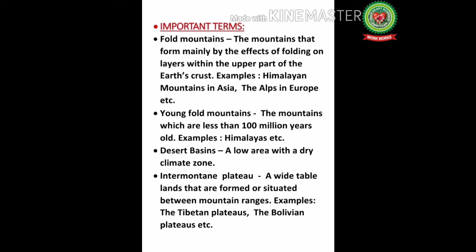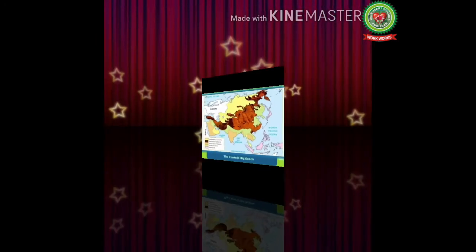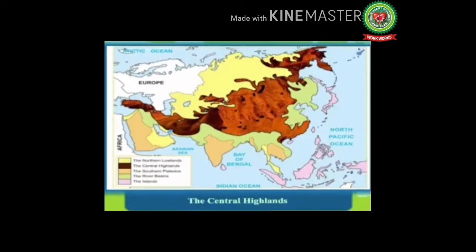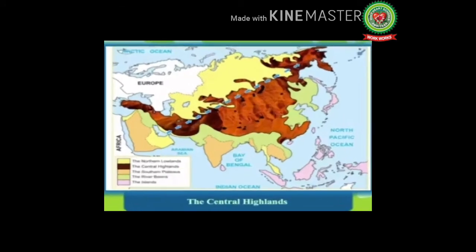Today's topic is the central highlands. The central highlands comprise a complex system of fold mountains and plateaus. It lies to the south of the northern lowlands and the north of the southern plateau. This belt runs across the continent from west to east, stretching from Asia Minor in the west to the Bering Strait in the east.